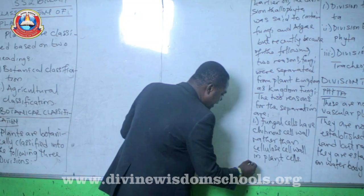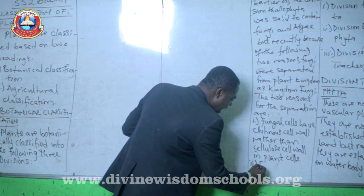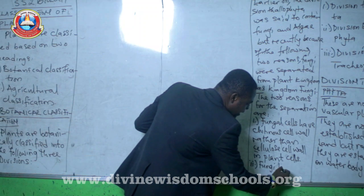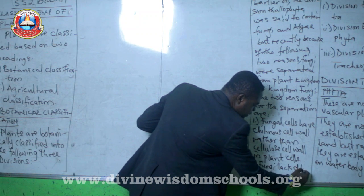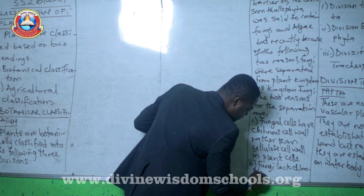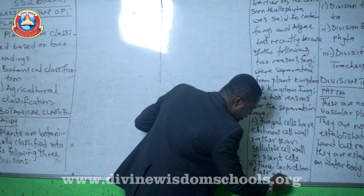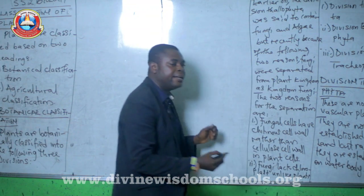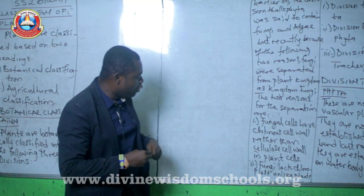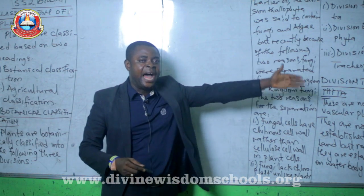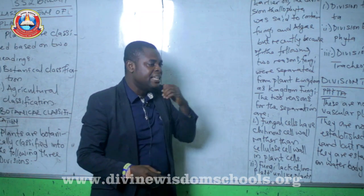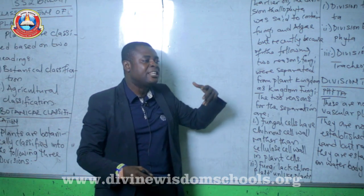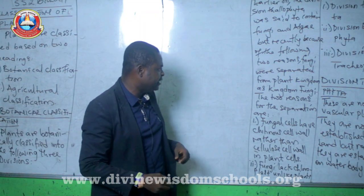Another reason is that fungi lack chloroplasts, unlike plants. Fungi lack chloroplasts, but plants have chloroplasts and can carry out photosynthesis. Because fungi don't have chloroplasts, they do not carry out photosynthesis.